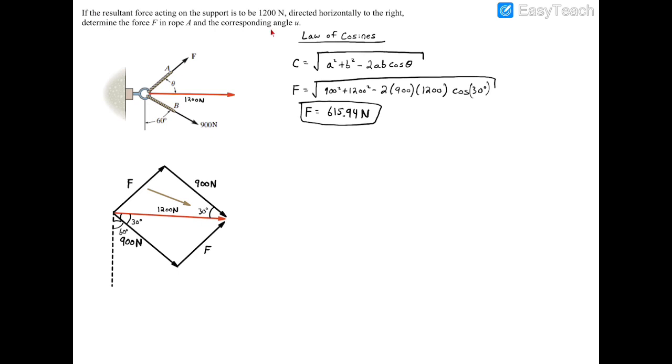So now it looks like the problem is asking for the corresponding angle u for that force. But what I think they're really asking for is going to be theta, but maybe they just didn't have the Greek keyboard for the Greek character for theta. So we're going to be looking for theta in this case. So let's mark up our triangle here. So we have 1200 going to the right. And then we have 615.94 going in that direction, and then 900 going in that direction.